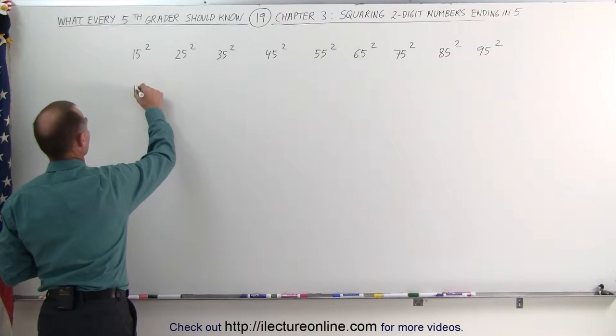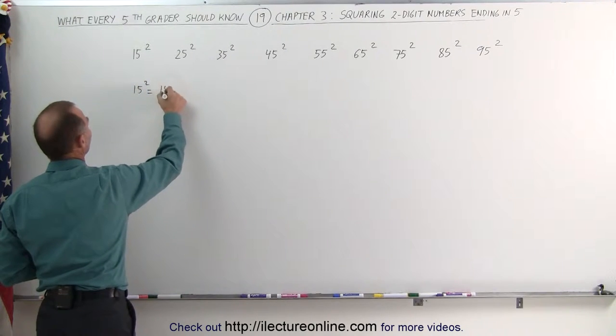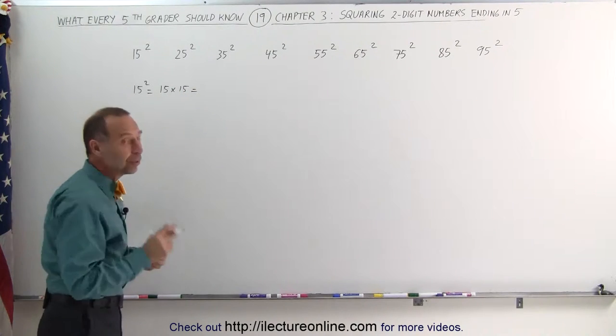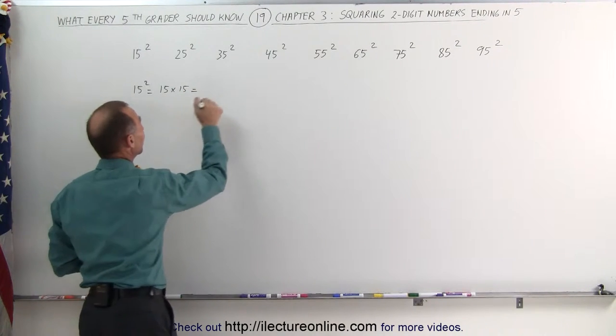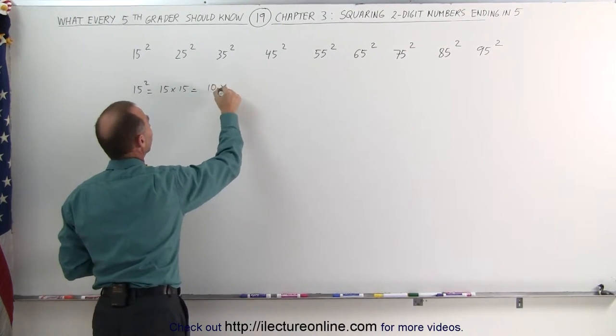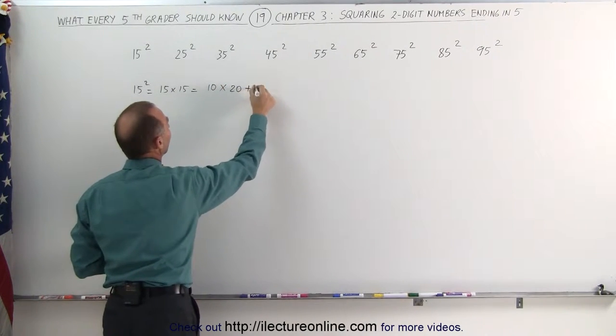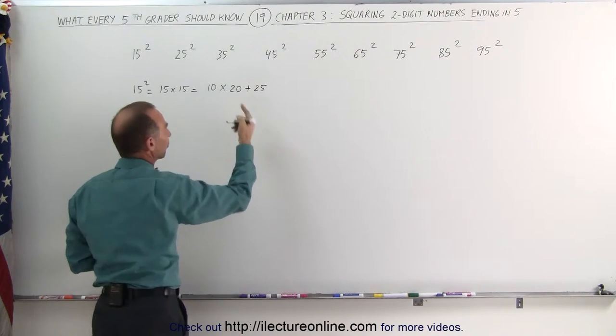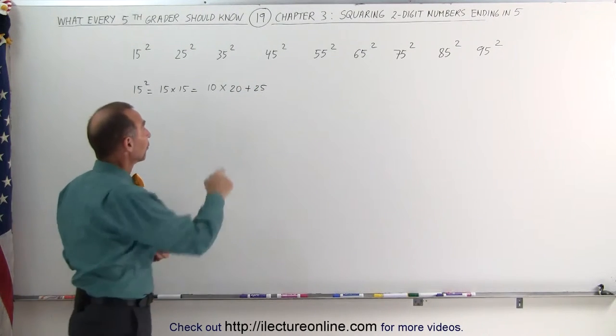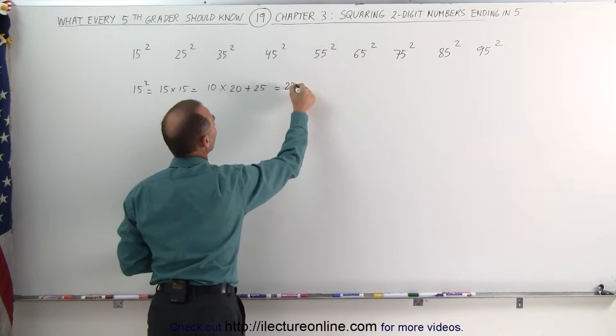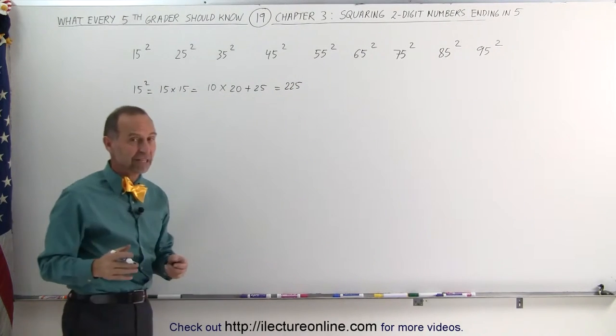15 squared is the same as multiplying 15 by itself, 15 times 15, and the way to do that is to first subtract 5 from that, so you get 10, and then add 5 to that, you get 20, so you end up multiplying 10 times 20, and then add 25 to that, because 25 is 5 times 5. So 10 times 20 is 200, plus 25 is 225, which is the same as 15 squared.